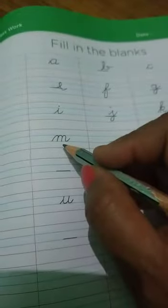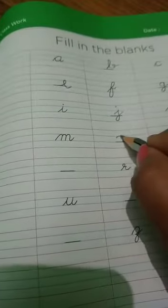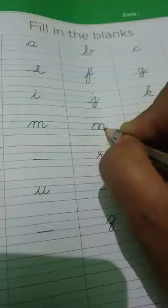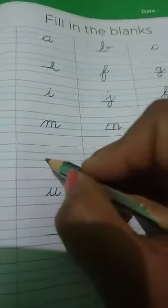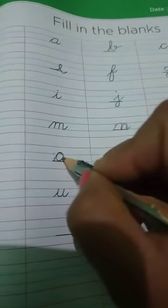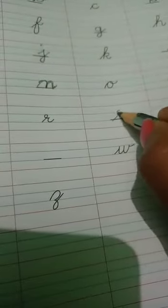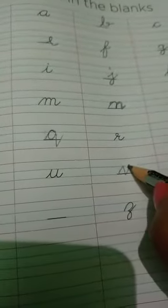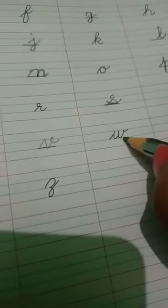After M, it comes N, and then N, O, P. After P, it comes Q, R, S, T, U, V, W.